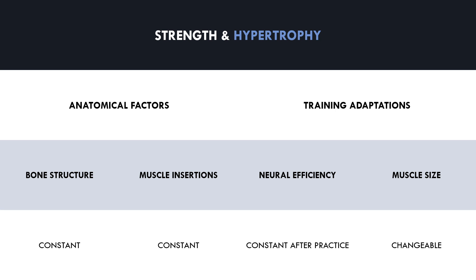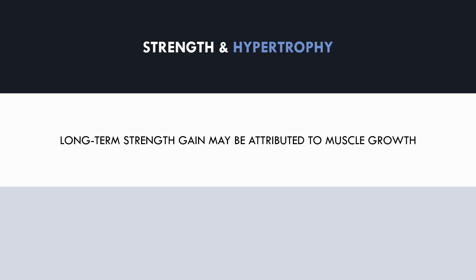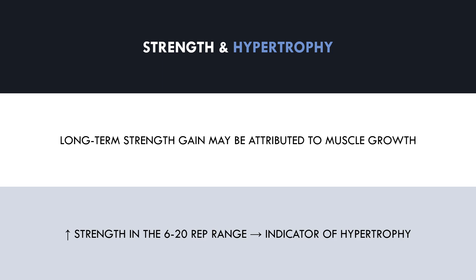However, we also know that muscle growth is best achieved in the 6 to 20 rep range, not the 1 to 5 rep range. This means that increases in strength in the 6 to 20 rep range are a better indicator of muscle growth than 1 rep max strength.